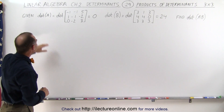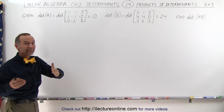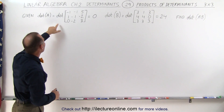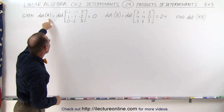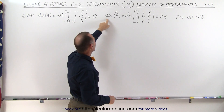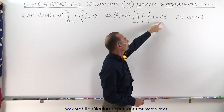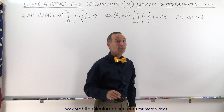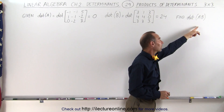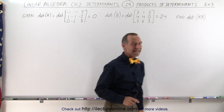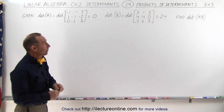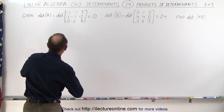We've already gotten the solutions because we've worked with these two matrices before. The determinant of matrix A is equal to 0, and the determinant of matrix B is equal to 24. Now we're going to find the determinant of the product of A and B, which means we first need to multiply the two matrices together.